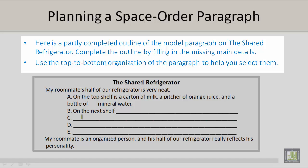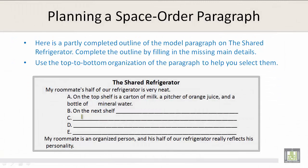Here is a partly completed outline of the model paragraph on the shared refrigerator. Complete the outline by filling in the missing main details on your own piece of paper. Use the top to bottom organization of the paragraph to help you select them. The shared refrigerator: 'My roommate's half of our refrigerator is very neat. On the top shelf is a carton of milk, a pitcher of orange juice, and a bottle of mineral water. On the next shelf, please fill in the blanks. My roommate is an organized person, and his half of our refrigerator really reflects his personality.'